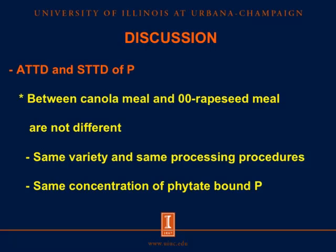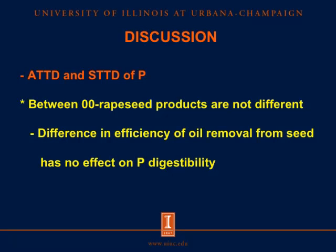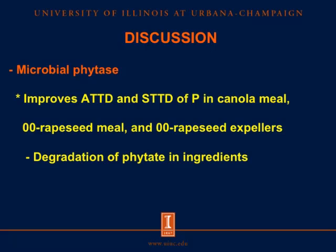We observed that ATTD and STTD of phosphorus between canola meal and 00 rapeseed meal are not different, likely because both came from the same varieties and same processing procedures, resulting in the same phytate concentration. We also observed that ATTD and STTD of phosphorus between 00 rapeseed products are not different, indicating that differences in oil removal efficiency have no effect on phosphorus digestibility. Microbial phytase improves ATTD and STTD of phosphorus through degradation of phytate in ingredients when used in pig diets.